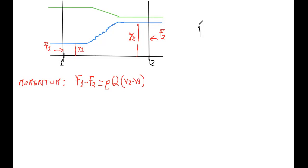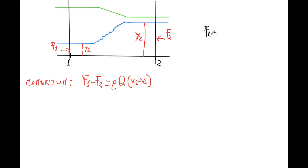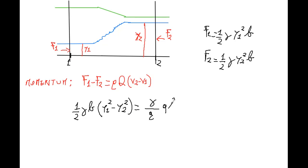F1 is equal to one-half gamma y1 squared B. F2 is one-half gamma y2 squared B. If we substitute, we obtain one-half gamma B times y1 squared minus y2 squared equals gamma over g lowercase q B.